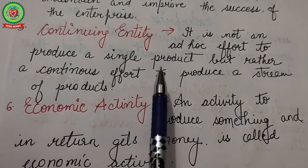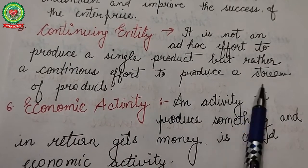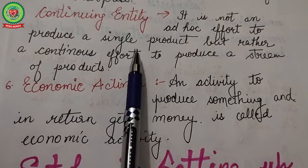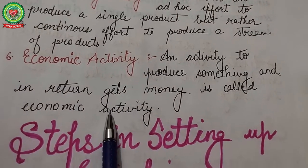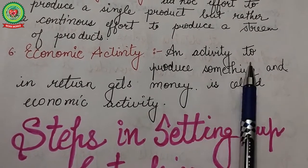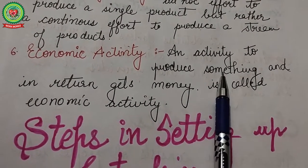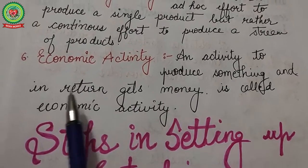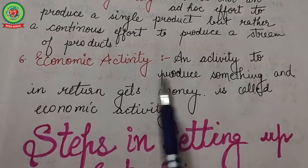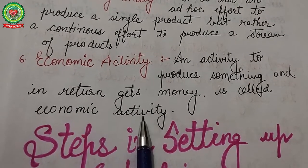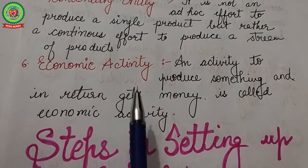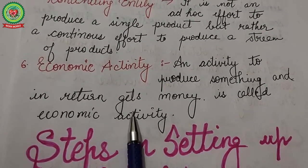The final characteristic is economic activity. An activity undertaken to produce something and in return get money or wealth is called an economic activity. These are all the characteristics of an enterprise.